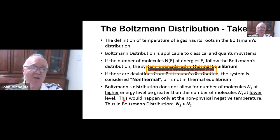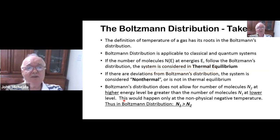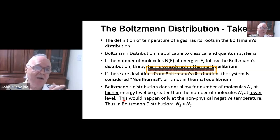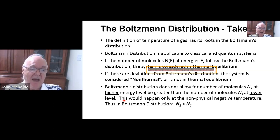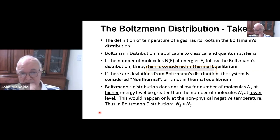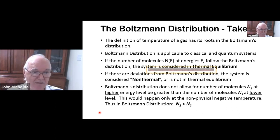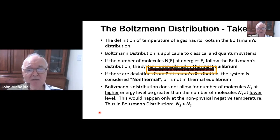Boltzmann distribution takeaways: The definition of temperature of a gas is rooted in Boltzmann distribution. Boltzmann distribution is applicable to both classical and quantum systems. If the number of molecules N_B at energy E follows the Boltzmann distribution, the system is in thermal equilibrium. If there are deviations, the system is non-thermal. Most importantly, Boltzmann distribution does not allow the number of molecules at a high energy level to be greater than at a lower energy level — the number of lower energy levels is always higher than that of high energy levels.